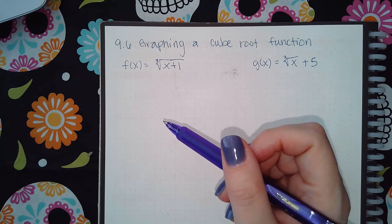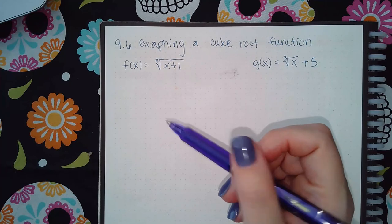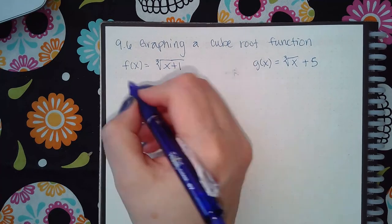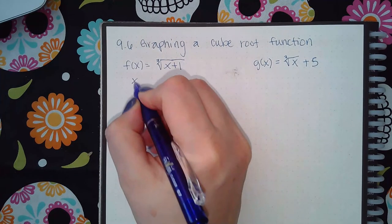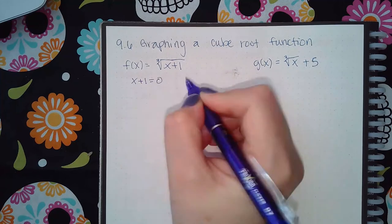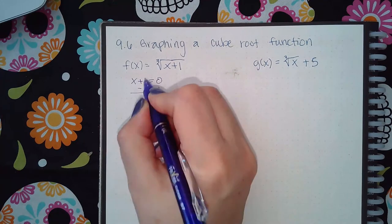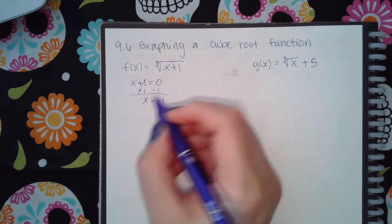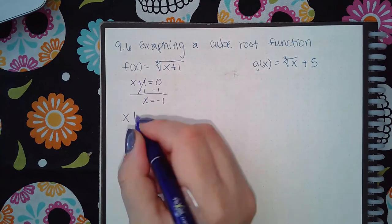So for a cube root, if I take the inside of that cube root, x plus 1 equal to zero, and I solve this equation, I get that x equal to negative 1 is the middle, the center.